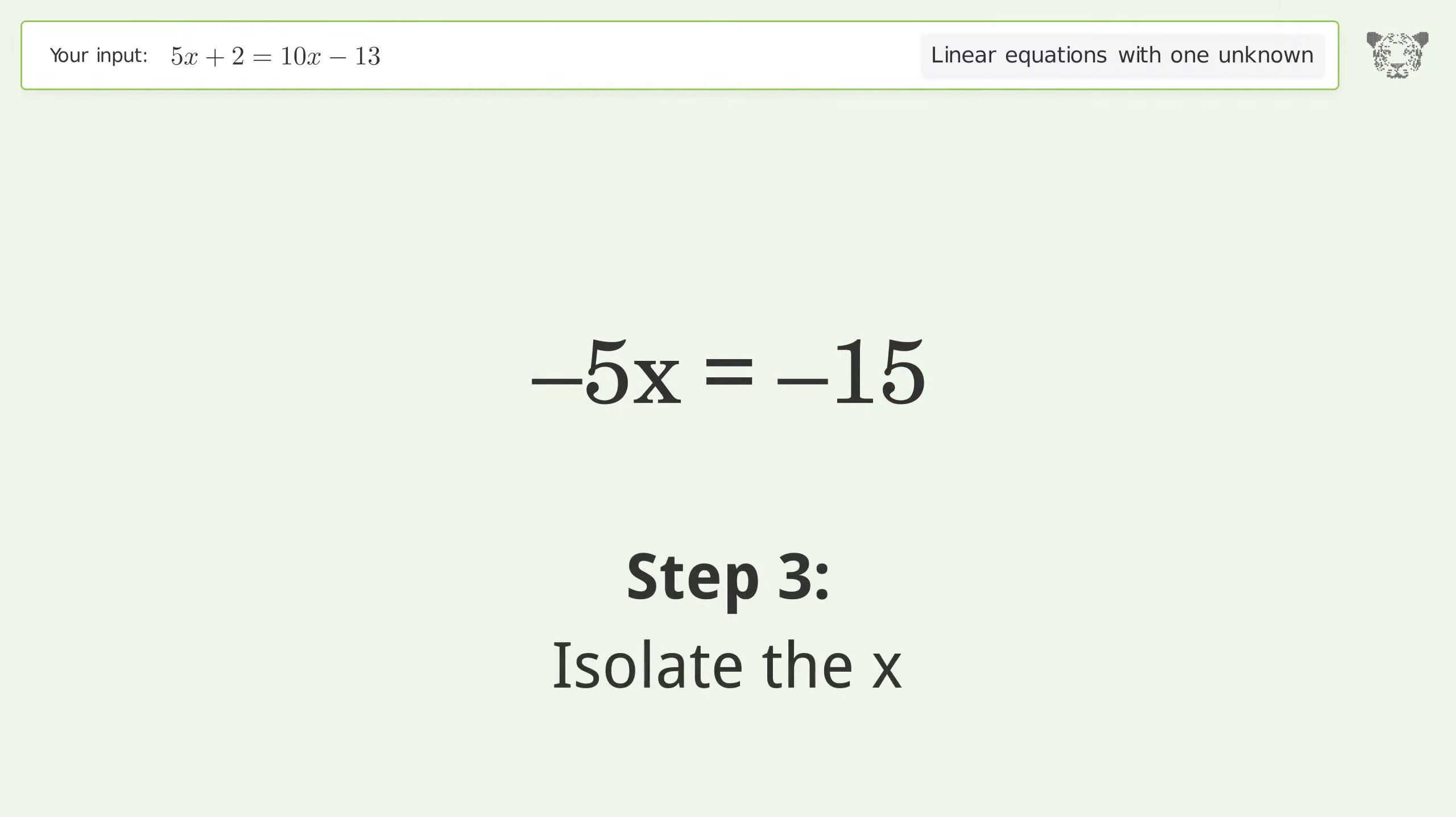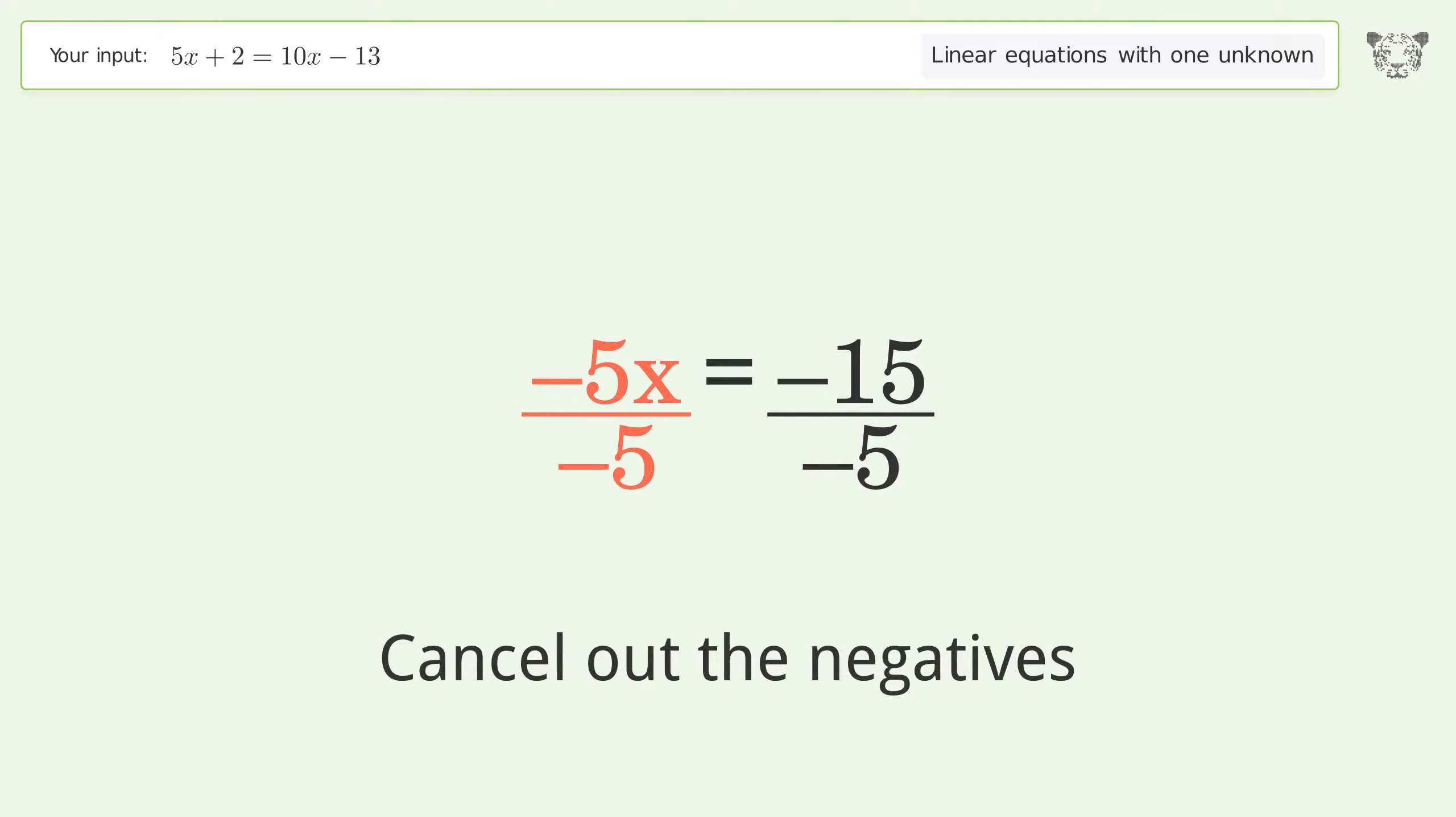Isolate the x. Divide both sides by negative 5. Cancel out the negatives.